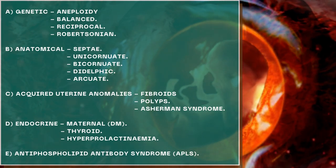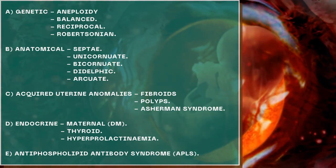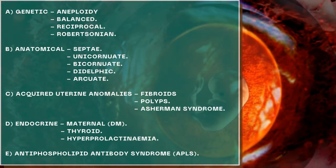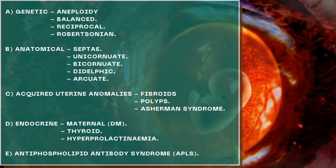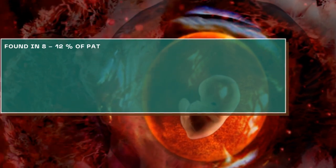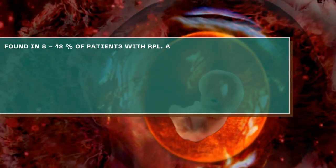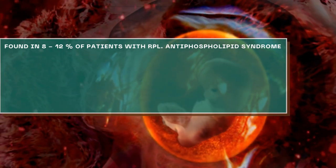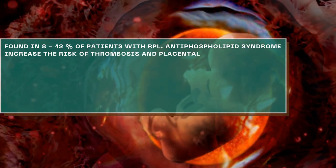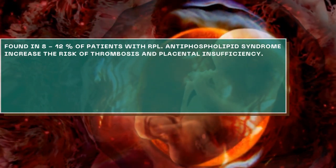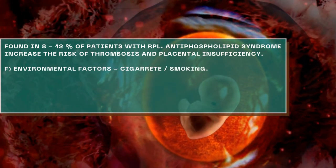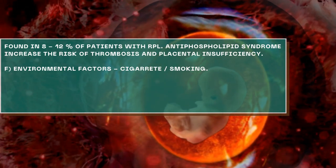We should also look for endocrine problems that can be maternal in origin, such as diabetes, thyroid disorders, and hyperprolactinemia, which is a rare cause of recurrent pregnancy loss but should still be investigated. Antiphospholipid syndrome, which we call APLS, is found in about 8% to 12% of patients with recurrent pregnancy loss. It increases the risk of thrombosis and placental insufficiency, where the baby's growth is impaired.